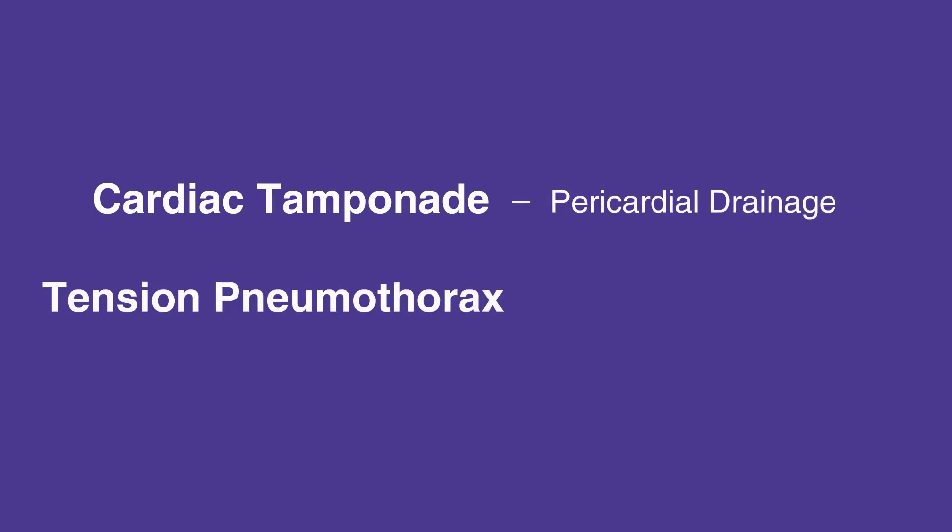Cardiac tamponade requires pericardial drainage. Tension pneumothorax requires needle decompression and subsequent placement of a chest tube, that is, tube thoracotomy.